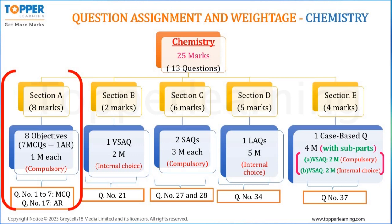In Section A, a total of 8 marks are allotted to chemistry with 8 objective questions of 1 mark each. These 8 chemistry objective questions comprise 7 MCQs and 1 assertion reasoning question. All questions are compulsory. Question numbers 1 to 7 will be chemistry MCQs and question number 17 will be the assertion reasoning question from chemistry.